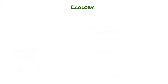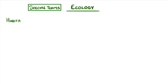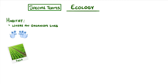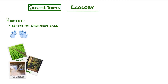Before we go any further, it's worth running through some of the special terms that you need to know for ecology. The first is habitat, which is just the place where an organism lives. So for our mice, that could be a field, a forest, or somebody's basement.